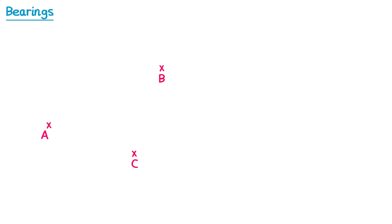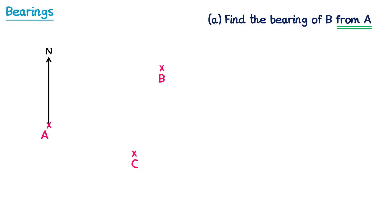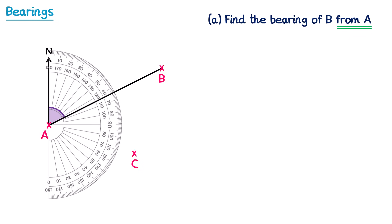Now let's try a second example. This time we're going to have three points A, B, and C, and we're going to start by finding the bearing of B from A. Since it says from A, we're going to draw a north line at A, then connect up A and B. We imagine we're stood at A, facing north, and we turn clockwise until we face B, which means we turn through this angle here. So we simply take the protractor, place it on with zero at north, and read off the angle on the outside scale. This one is 64 degrees, so a bearing of 64.